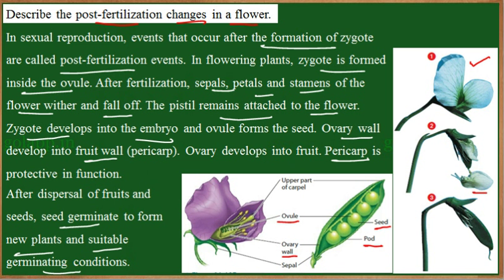To summarize the changes in the flower after fertilization: the petals and the androecium fall off; the sepals in pea remain. The ovule develops into the seed, the ovary develops into the fruit, and the wall of the ovary develops into the fruit wall, that is, the pericarp. After seed dispersal, the seeds germinate into a new plant.